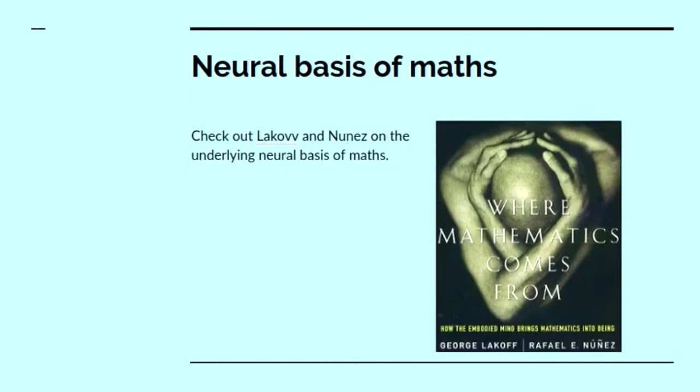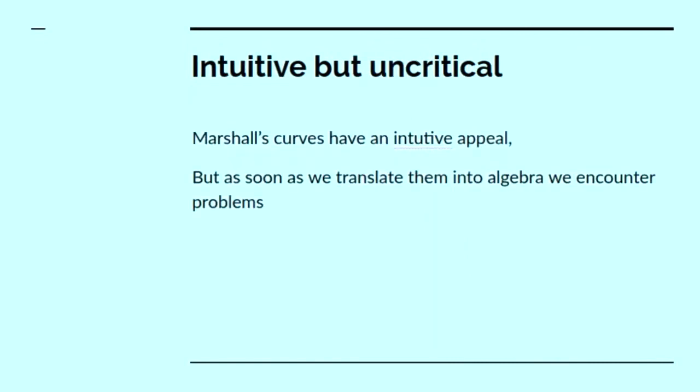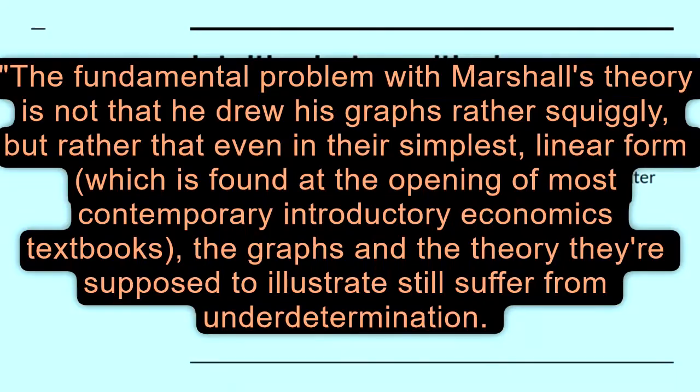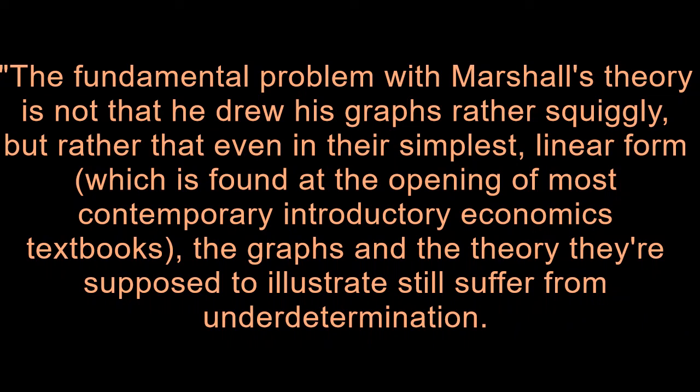If you want to go into this in more detail, I can advise you to read Lakoff and Nunez's book On the Underlying Neural Basis of Maths. It's called Where Mathematics Comes From. Now, Marshall's supply curves have an intuitive appeal, but as soon as we translated them into algebra, we saw there were problems. The point is, don't trust optical illusions. Your brain, your visual cortex, is very susceptible to optical illusions. Instead of relying on visual images like that, which are okay for pedagogy, but if you want to see whether something's true, don't trust optical illusions.